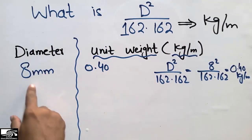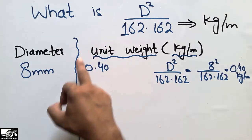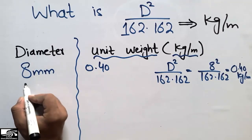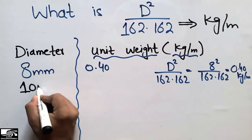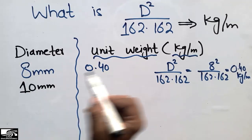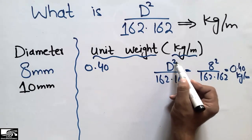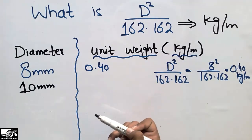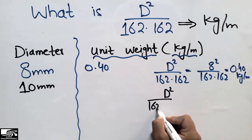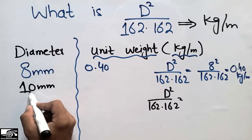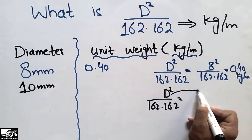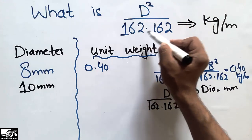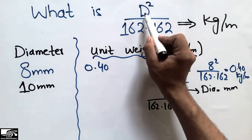We can find the unit weight of different diameter bars in the same way. For example, for a 10 millimeter bar, simply put D = 10 and take the square, then divide by 162.162, to get the unit weight in kilogram per meter. The diameter should always be in millimeters in this formula.